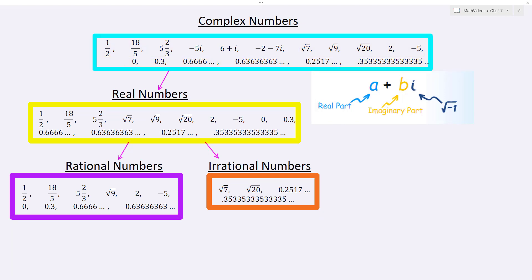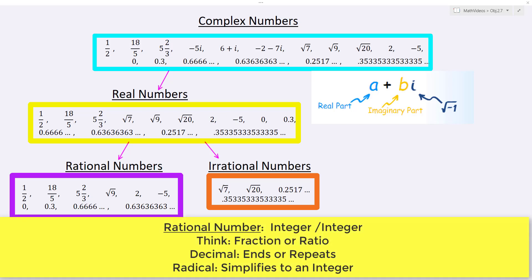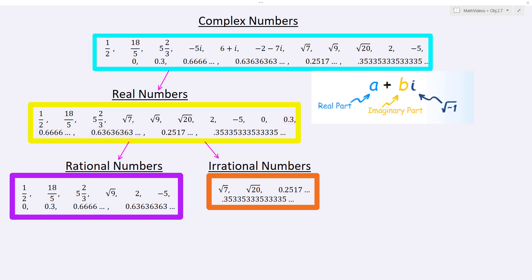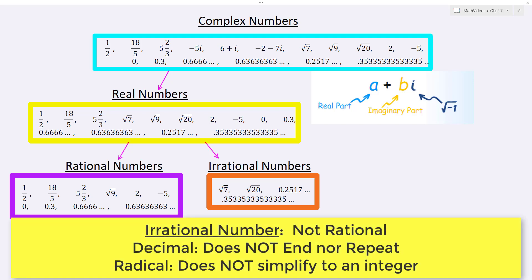The real numbers split into two subsets: the rational numbers and the irrational numbers. Rational numbers are basically an integer divided by an integer — I often think fraction for ratio, rational. Anything in fractional form is definitely rational. All whole numbers and integers can be written over 1, so they're rational. Any radical that comes out to a whole number is rational, and a decimal that ends or repeats is considered rational. Irrational numbers are those that are not rational — decimals that do not end and do not repeat, and radicals that don't come out to be whole numbers.